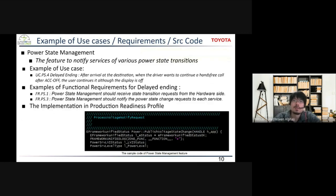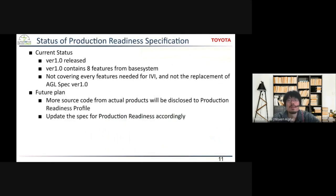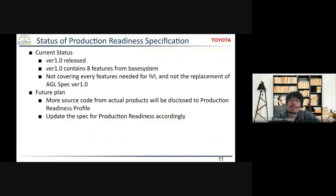The source code for this is shown on the slide. We have just released version 1.0, and this version only contains eight features implemented in the base system — it does not cover every feature needed for IVI and is not yet a full replacement of the AGL spec. As a future plan, we plan to contribute more source code from actual products to the production readiness profile and update the spec accordingly to keep source code and spec consistent. I'd like to pass over to Chris, who will present Flutter in AGL.